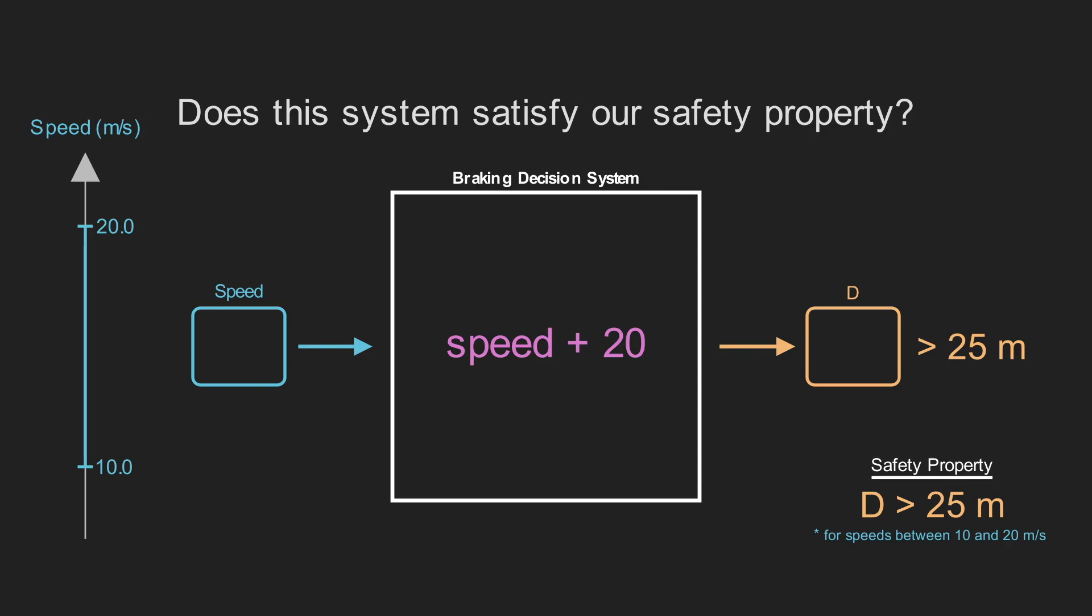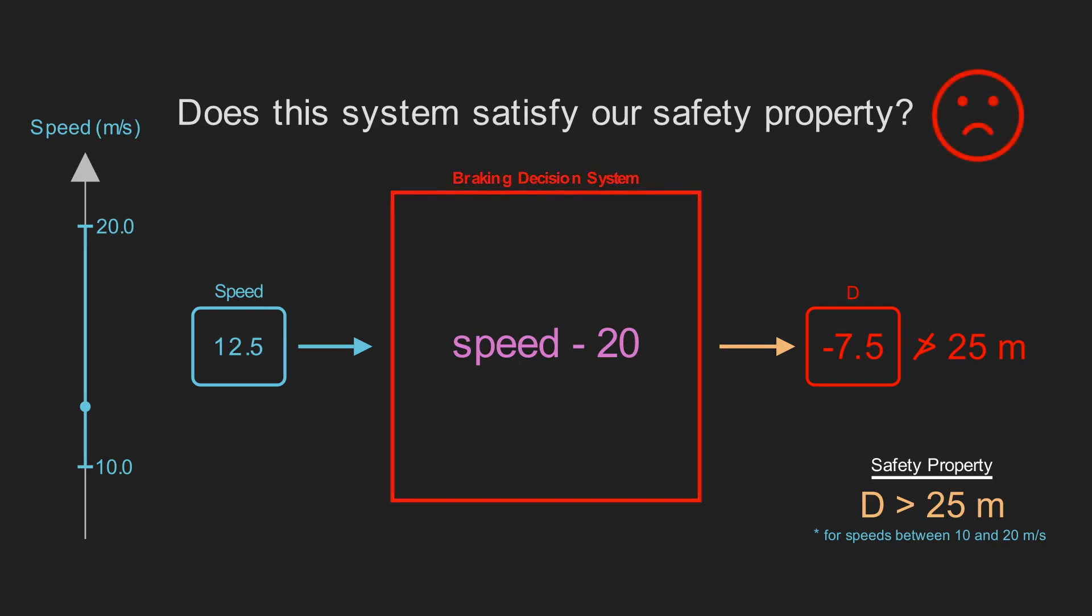One way to reason about this is to notice that inputting the smallest speed in our input range will give us the smallest possible output. In this case, if we input 10, our output will be 30. Since this is the smallest possible value we can get, and it's greater than 25, this system satisfies our safety property. But what if we change the plus sign in the formula to a minus sign? In this case, any value from our input range will result in an output less than 25, so we know that this formula would not satisfy our safety property.